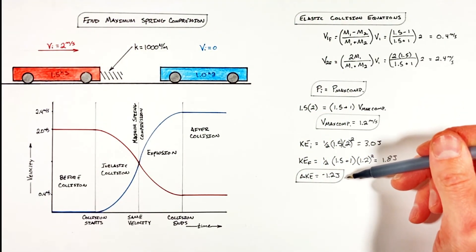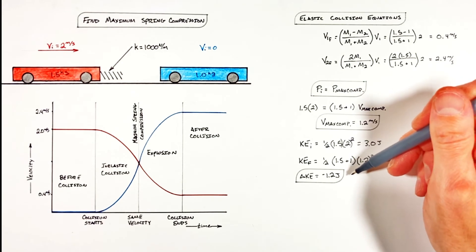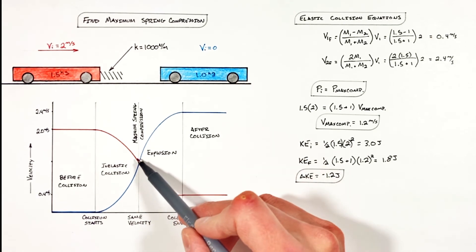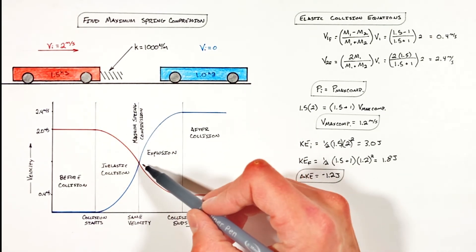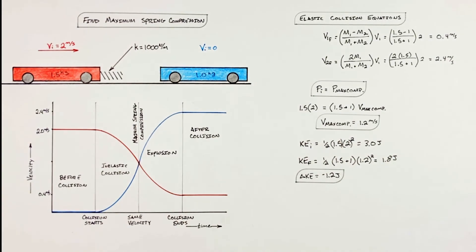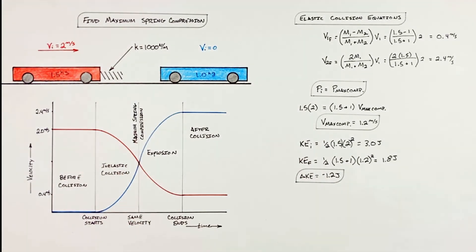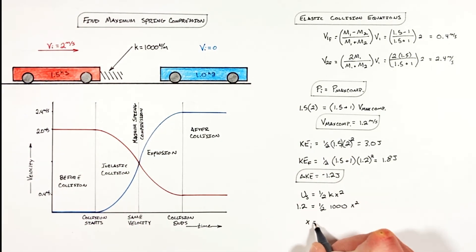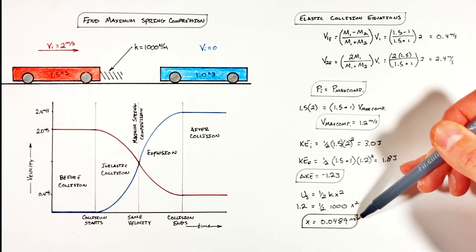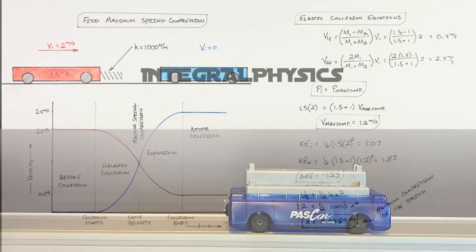Whenever an inelastic collision occurs, kinetic energy is lost. We find 1.2 joules of kinetic energy are lost as this inelastic collision occurs and the spring compresses. The key is understanding where this kinetic energy went — as the spring is compressed it's storing energy, and as the explosion occurs the spring relaxes and releases that energy back into the two carts. If we know the energy stored in the spring and the spring constant, we can find the total compression distance. We find that at maximum compression this spring has compressed roughly five centimeters.